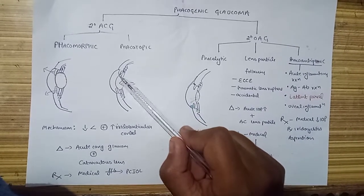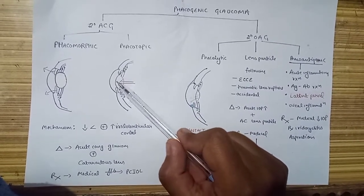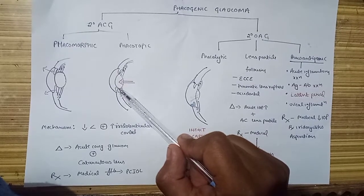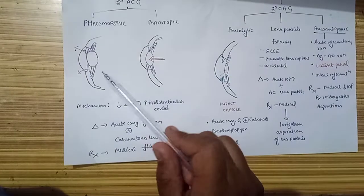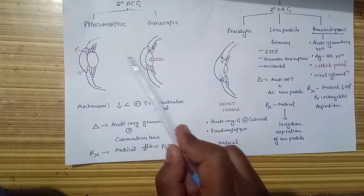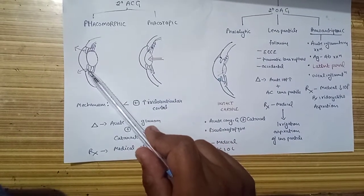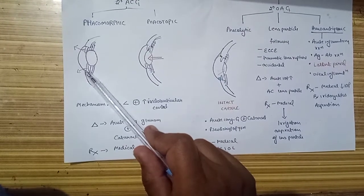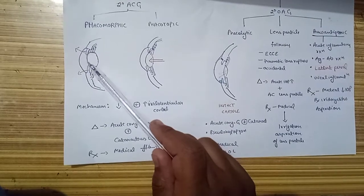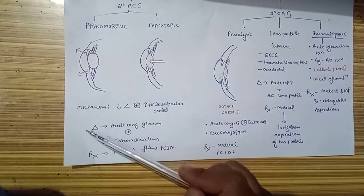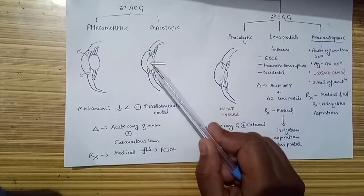The other one is phacotopic glaucoma where there is anterior displacement of the lens, pushing the iris. The pathogenesis of these two are almost similar: a swollen lens and an anteriorly displaced lens pushes the iris forward, hence closing the iridocorneal angle and disturbing the drainage of aqueous, increasing the IOP.